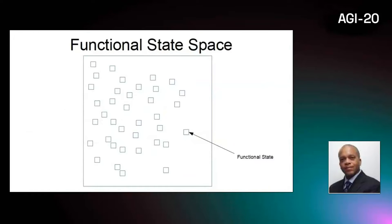If a system can be transformed by a set of functions, and all the functions map to and from the same domain, then all the states accessible through those functions form a functional state space. Through executing its functions, the system moves through that functional state space.